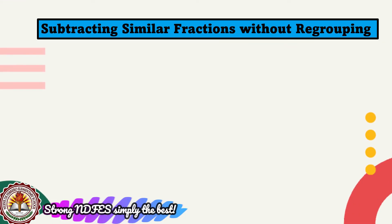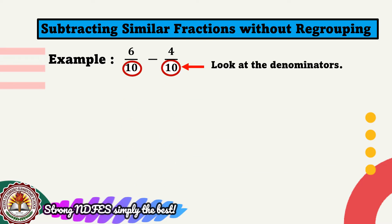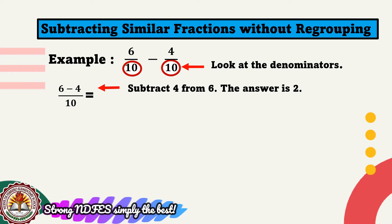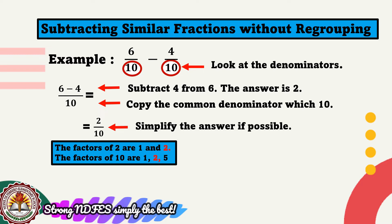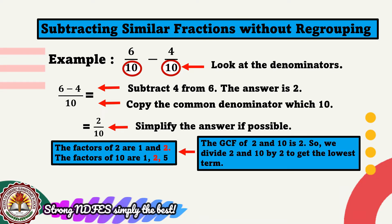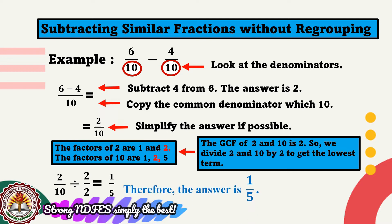Let us have an example of subtracting similar fractions without regrouping. For example, 6 tenths minus 4 tenths. Look at the denominators — they are the same. Subtract only the numerators: the answer is 2. Copy the common denominator which is 10, so our answer is 2 over 10. Simplify: the GCF of 2 and 10 is 2. Dividing both by 2 gives us 1 over 5. Therefore, the lowest term of 2/10 is 1/5.